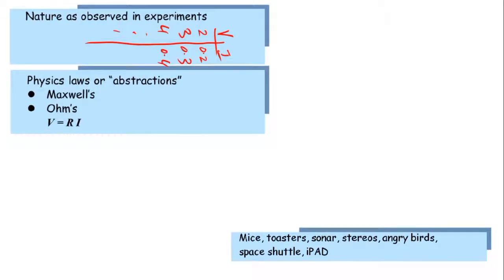What we do as engineers is we start by building laws or abstractions that succinctly describe how nature behaves. For example, I can take these measurements that I made of voltages and currents, and I can say, aha, I can describe certain materials that behave according to certain laws and write an equation such as V is equal to Ri, which is Ohm's law, that governs certain types of devices.